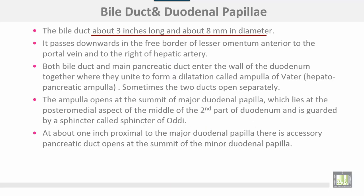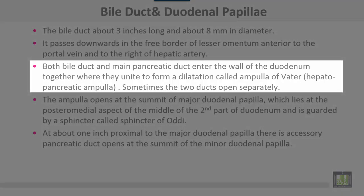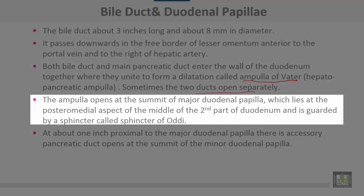The bile duct is about three inches long and approximately eight millimeters in diameter. It passes downwards in the free border of the lesser omentum, anterior to the portal vein and to the right of the hepatic artery. Both the bile duct and the main pancreatic duct enter the wall of the duodenum together, where they unite to form a dilatation called the ampulla of Vater, or hepato-pancreatic ampulla. Sometimes the two ducts open separately. The ampulla opens at the summit of the major duodenal papilla, which lies on the posteromedial aspect of the middle of the second part of the duodenum.